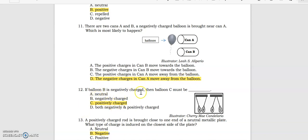If balloon B is negatively charged, then balloon C must be... As you can see in the picture, it is attracted to balloon A, therefore balloon A is positively charged.